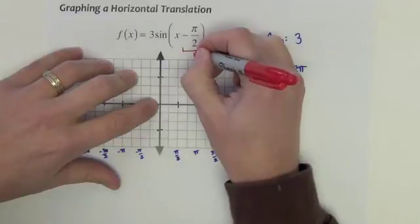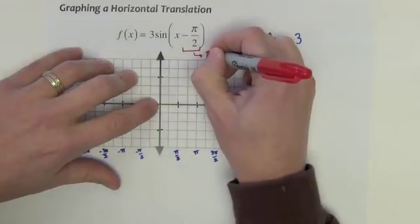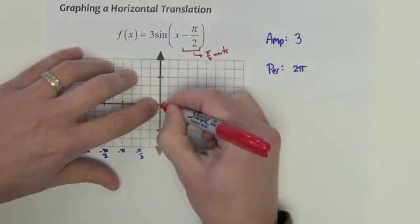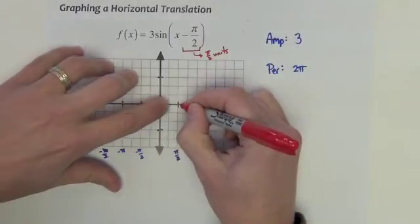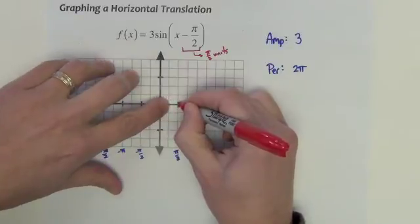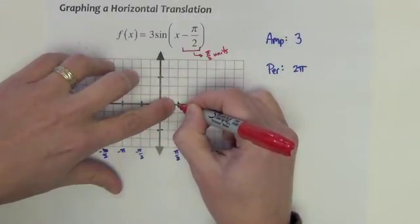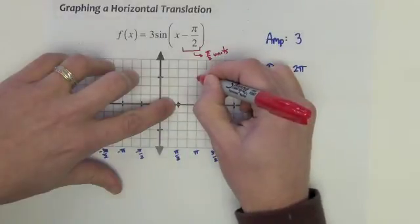So this graph needs to go to the right, π/2 units, and start there. So instead of starting right here at the origin zero zero, it's going to go right here to π/2, and it's going to start. And then from that point, as its beginning point, then we're going to see the sine pattern.